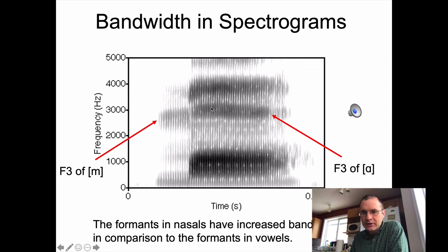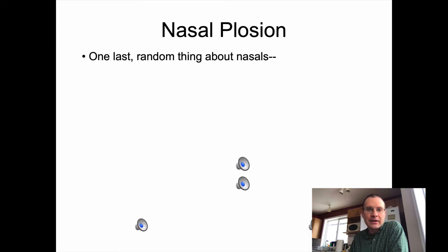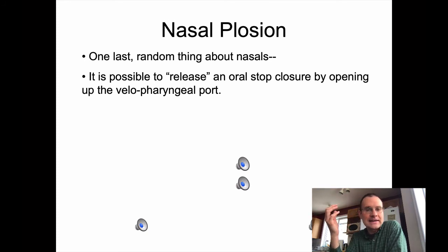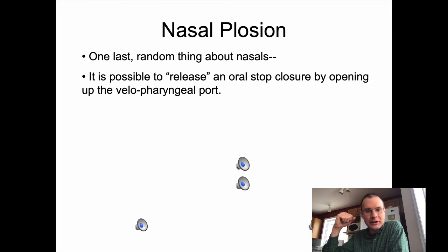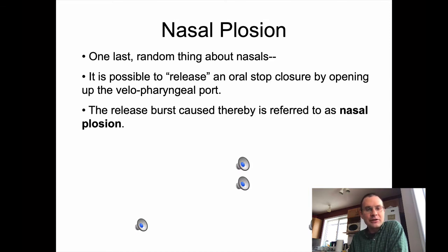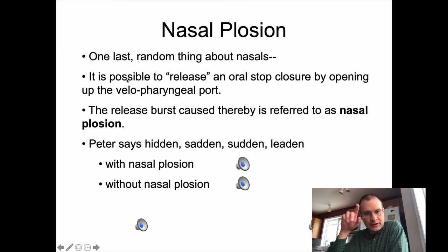You should be able to spot these when looking at spectrograms. I'll give you one last random fact about nasals, which is kind of fun. Talking about opening and closing that velopharyngeal port with your soft palate — you can release an oral stop closure, like a D, not by the usual route of releasing or lowering your tongue to get that alveolar release burst. You can actually release it by opening up the velopharyngeal port so that air starts flowing through your nose, going straight from oral stop to a nasal stop without any vowel in between. When you do this, it's called nasal plosion, and it's represented in the IPA with a superscripted nasal stop — a D with a superscripted nasal right next to it.